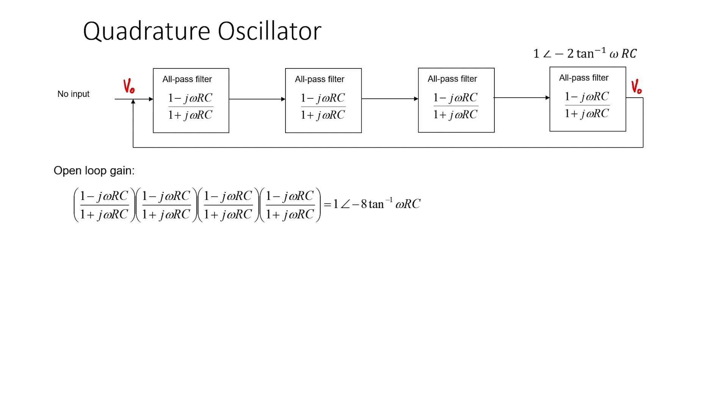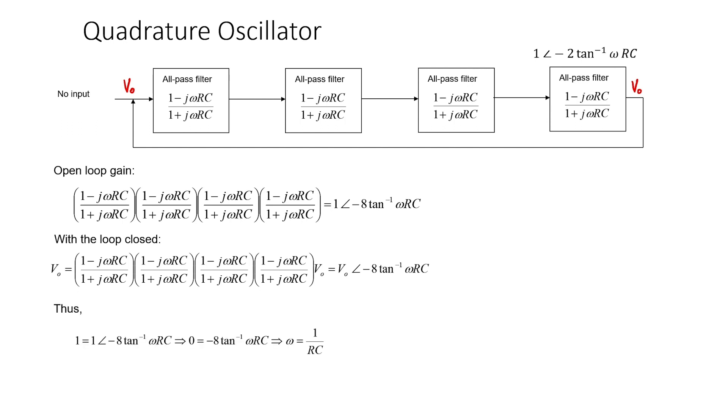I've merely added the phase angles of each filter. When we close the loop, we know that the output voltage equals the open-loop gain times the output voltage. Therefore, for 1 to equal 1, the net phase shift must be 0.